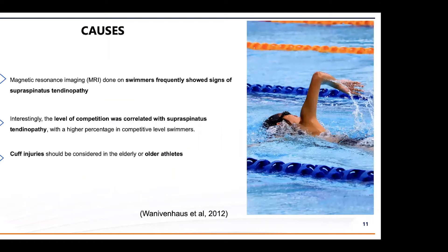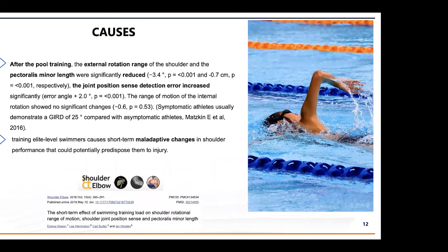To summarize the causes — subacromial impingement, or better defined as subacromial pain syndrome — we have excessive use, possible supraspinatus tendinosis, muscle fatigue, scapular dyskinesis, maladaptive postural compensation, laxity, and instability. Male swimmers more frequently show signs of supraspinatus tendinopathy, and the level of competition correlates with it. After pool training, external rotation range and pectoralis minor length are reduced, and joint position sense detection error increases, making recovery of these factors essential.